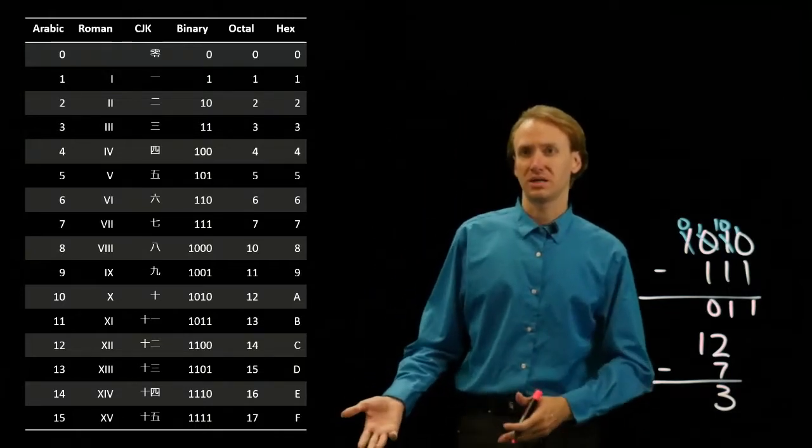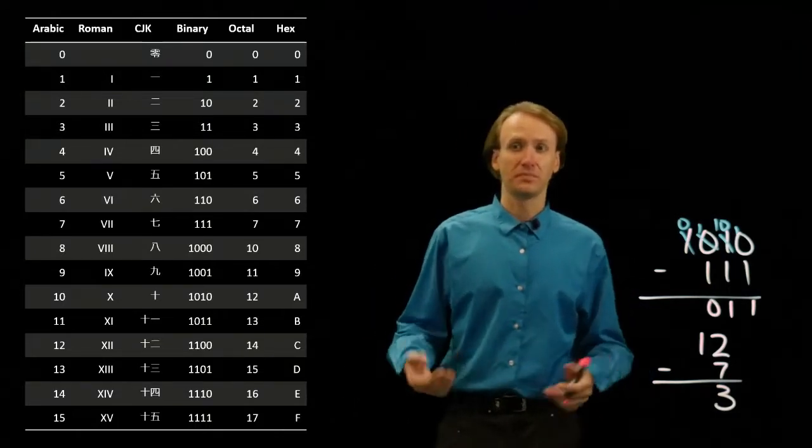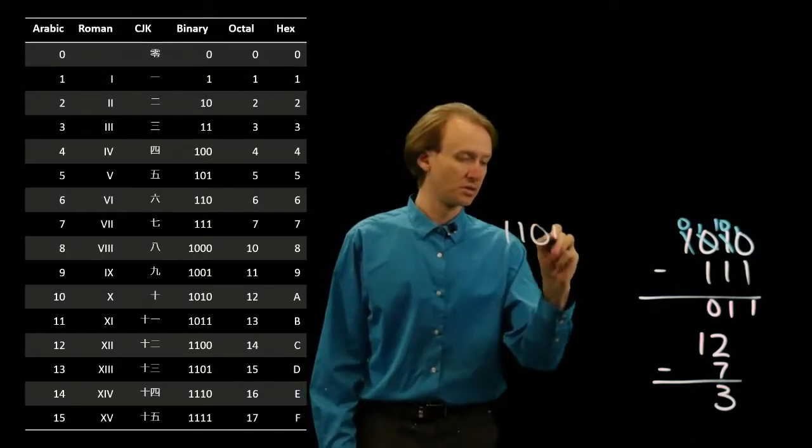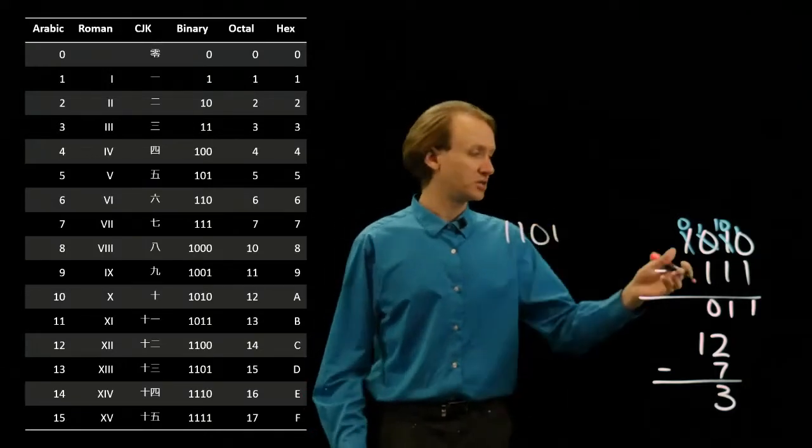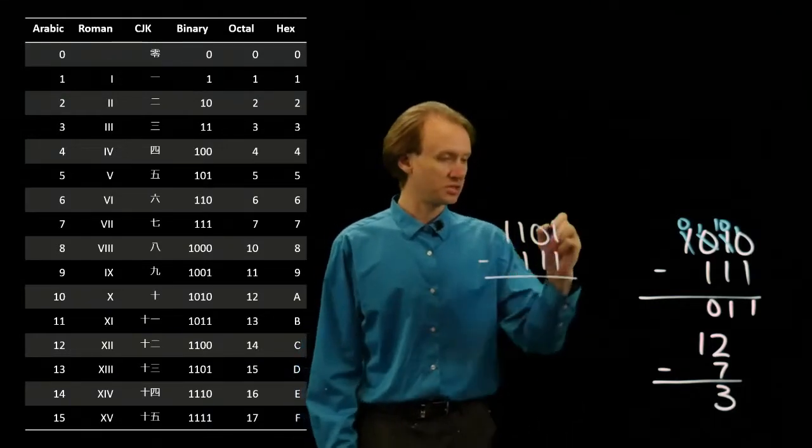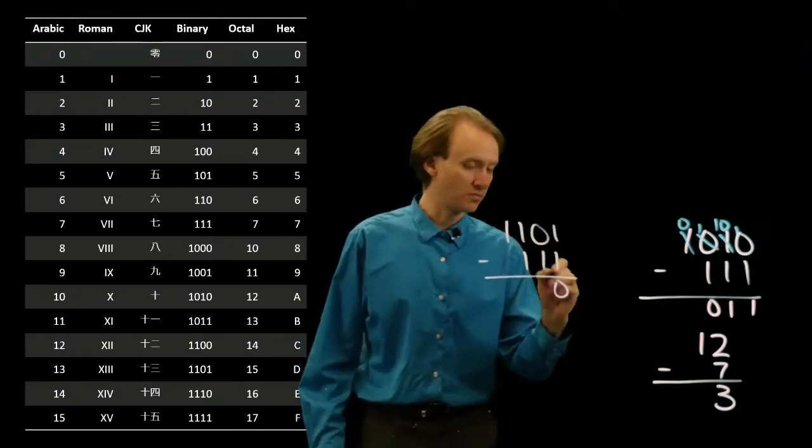For another example, I might take 13 minus 7. 13 in binary is [writes value], and 7 is still 1, 1, 1. So, if I do this subtraction, 1 minus 1 is 0.